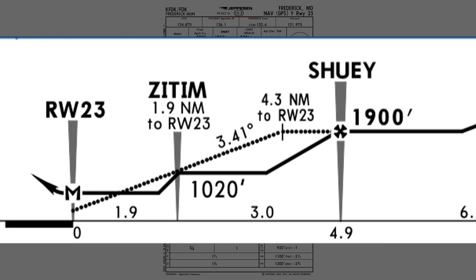This allows us to fly the same descent angle and cross ZITP at 1020 feet. We won't need to destabilize our approach and change the descent angle on final. If we started the glide path at the final approach fix, we'd bust the step-down at ZITP. There's no way to draw a straight line from Shuey at 1900 feet to the missed approach point at the MDA without busting at ZITP, so we just delay the descent.